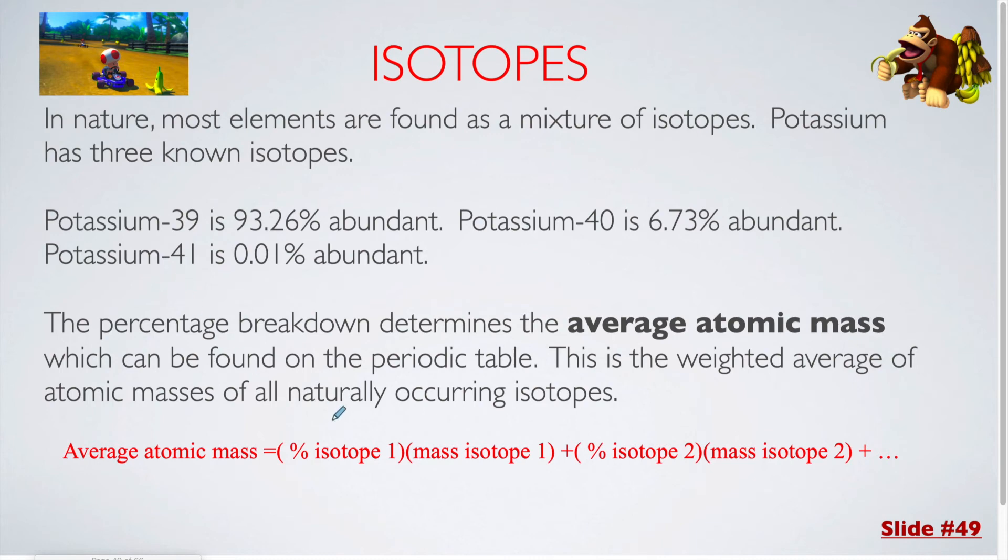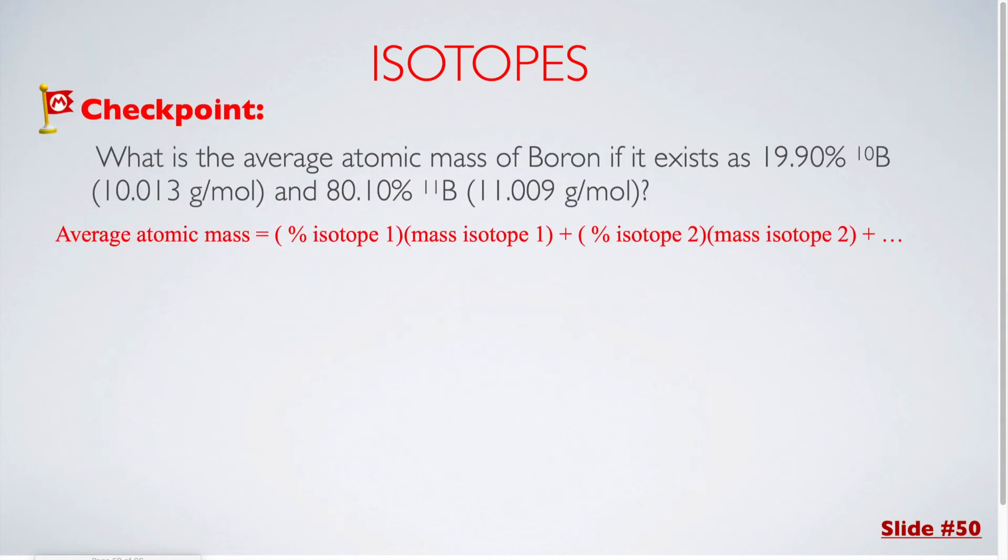The percentage breakdown determines the average atomic mass, which is what you can find on the periodic table. This is a weighted average of the atomic masses, so the percent abundance is a contributing factor into what the final answer will be. The formula that you can use to determine the average atomic mass is shown here. You're going to multiply the percentage times the mass for as many isotopes as there are. In this formula, I just have two, but then you can also see our dot, dot, dot, so there could be as many isotopes as you need, and you could just continue to fill this out.